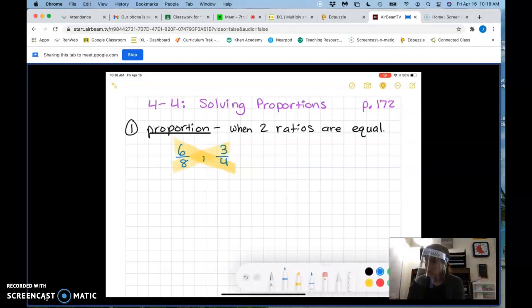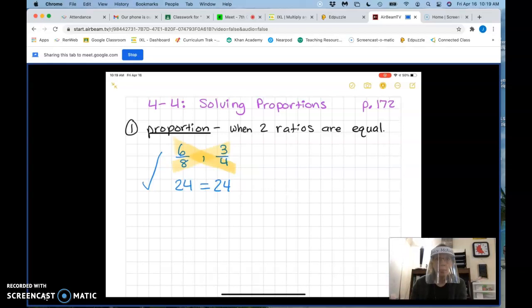So what is 6 times 4? 24. And what is 8 times 3? 24. Do these two numbers equal each other? Yes. They do. So guess what? These two ratios are a proportion or form a proportion. They are equal to each other and that's how we find out if they're equal by just cross multiplying. If the numbers are the same they're equal.